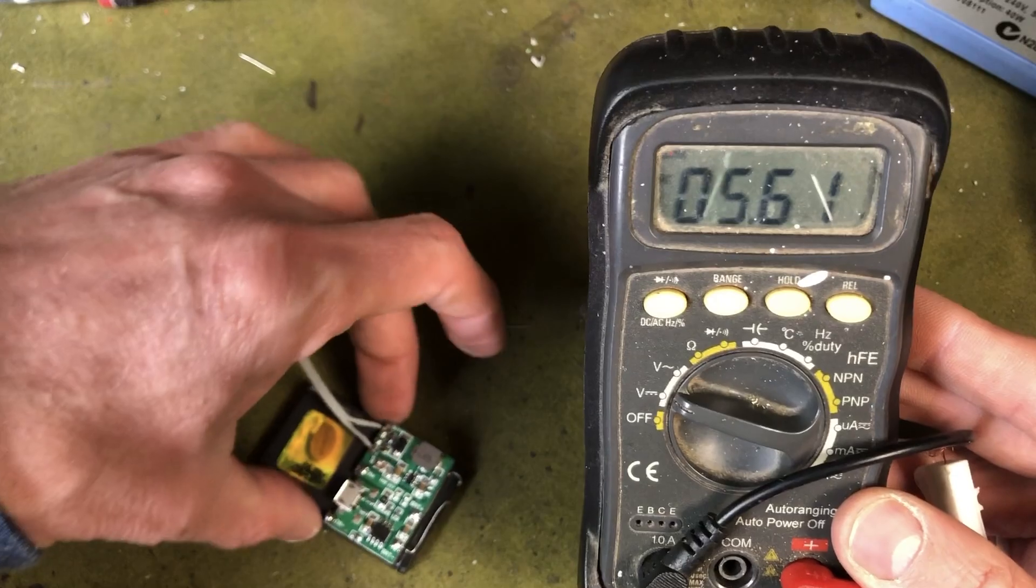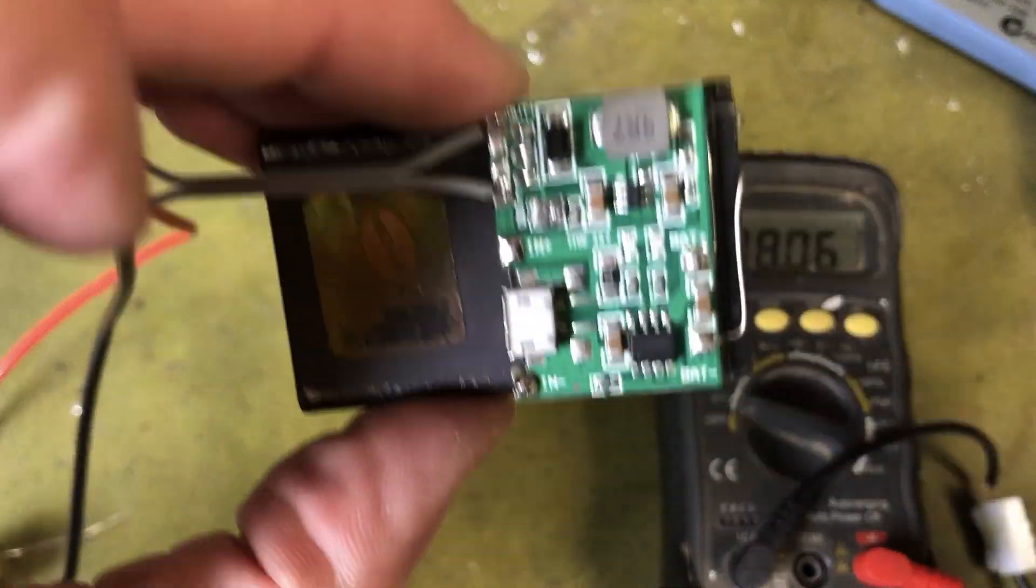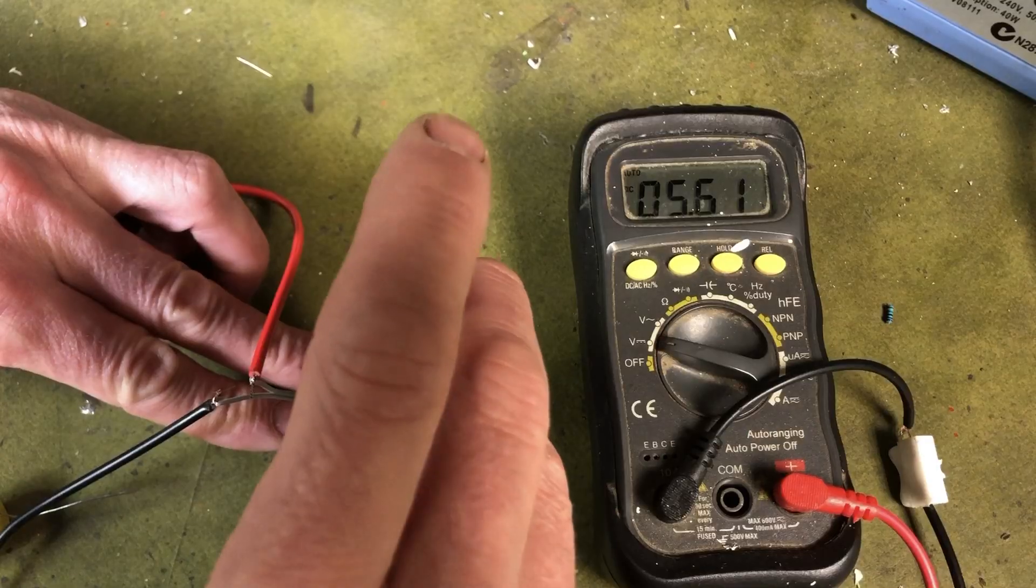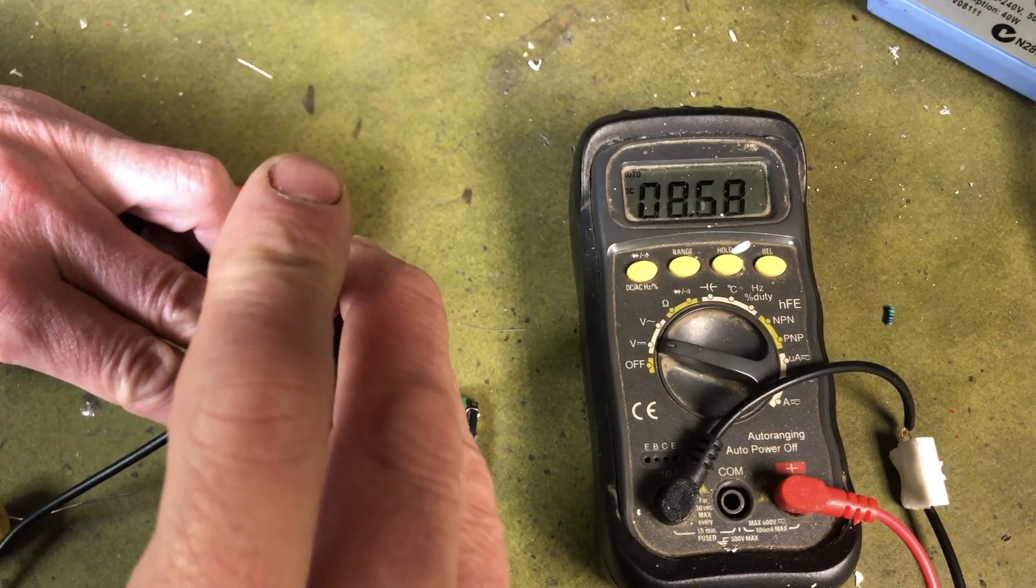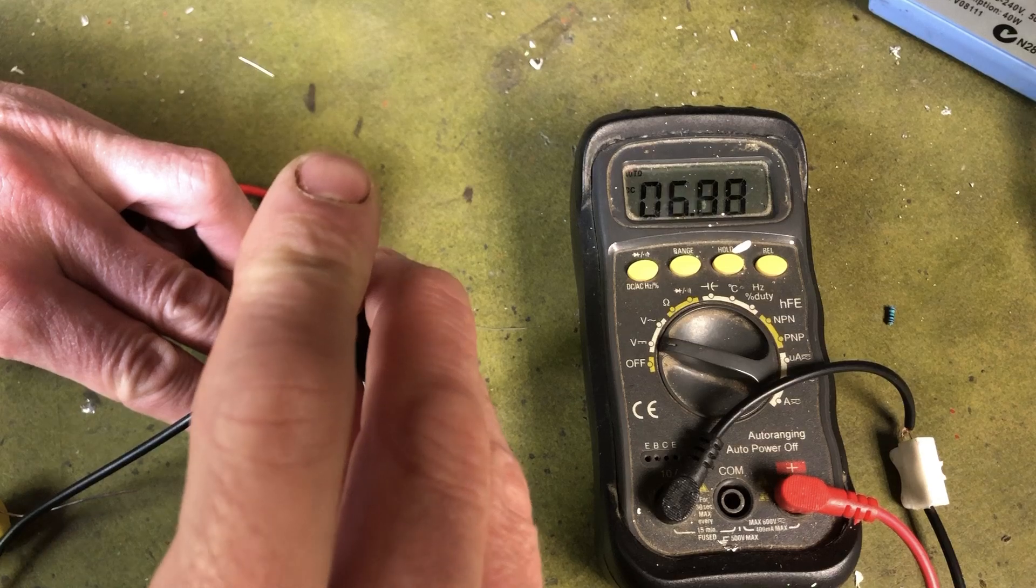Now here I'm testing the voltage coming out of the module. It's 5.61 now and there's a tiny little potentiometer there that you can twist and you can see the voltage going up there. I set the voltage at 5 volts but you can set it for whatever you want. I think it goes up to 29 volts.